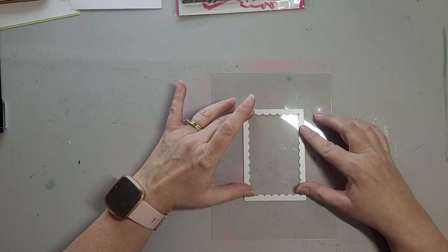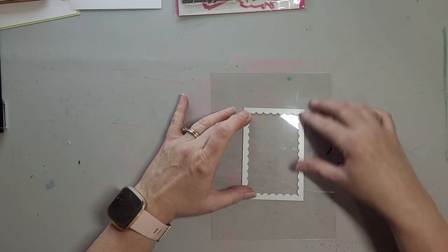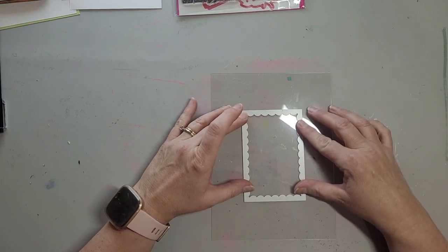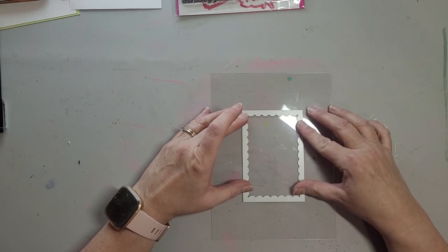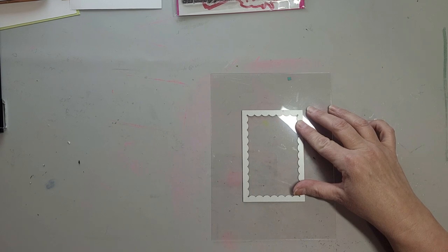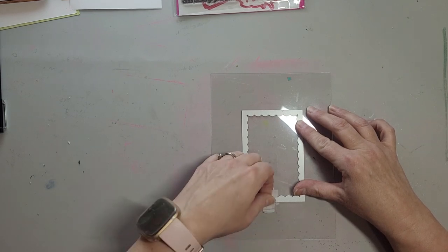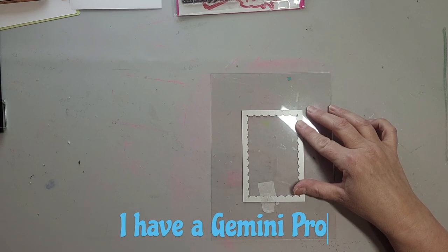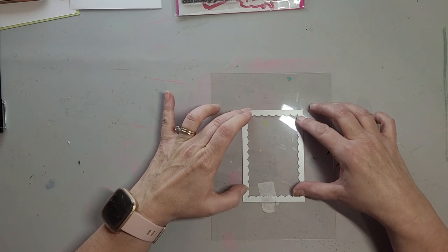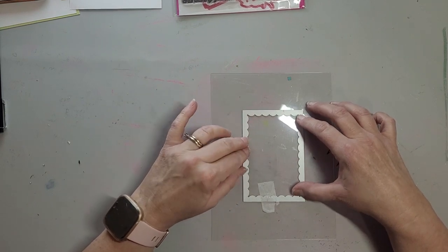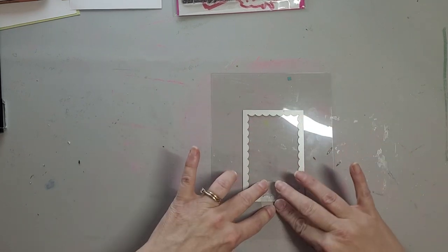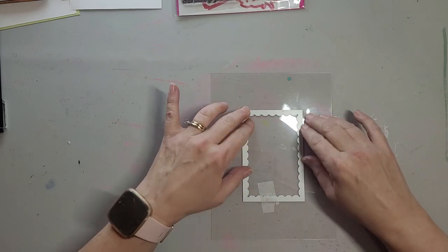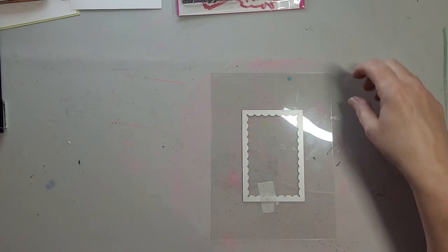I am going to use the second one down in the set. I'm going to center this on the acetate, it's probably hard to see. Then we're going to tape it down and run it through my machine. Normally with my machine I don't use the magnetic shim, but when cutting acetate I do need the magnetic shim. Whatever works for whatever machine you have to cut acetate, use that. Let me run this through.